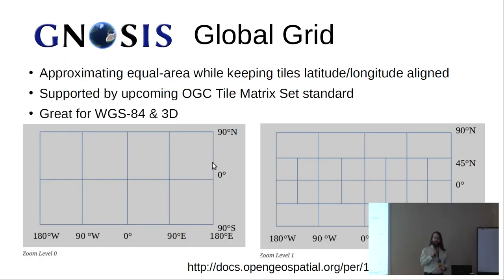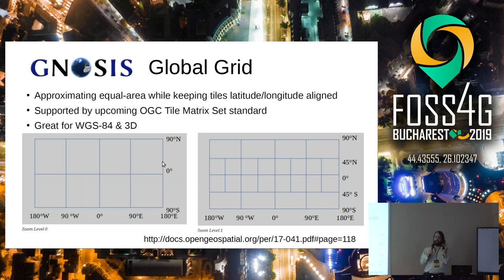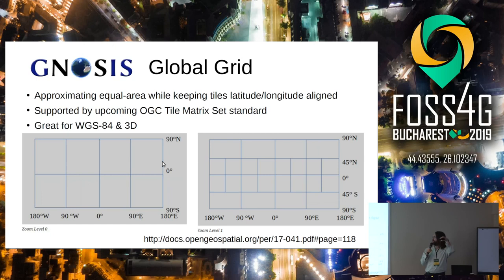This is the global grid. Basically the whole world is divided at level zero into eight tiles: four tiles for the north hemisphere and four for the south, each 90 degrees by 90 degrees — the same tiles used in NASA's Blue Marble Next Generation distribution. When you go to the next zoom level, the rule is almost a quad tree: every time you go to the next level you cut in four, but if a child tile touches the pole, you don't cut the part that touches the pole. So you end up with only three tiles instead of four for the part touching the pole.